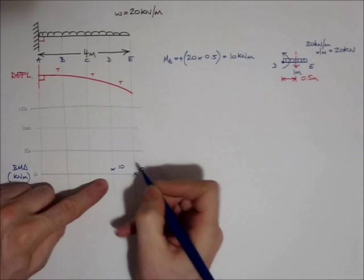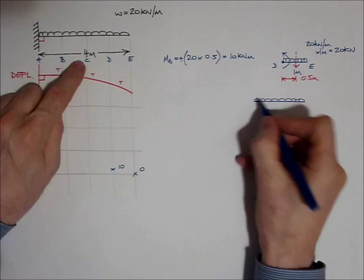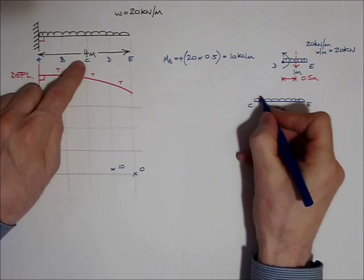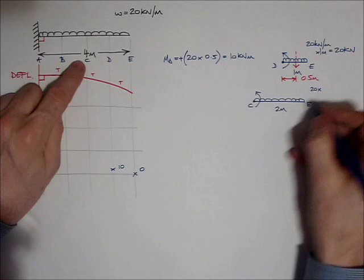Let's move on to point C. So point C, I can draw out the free body diagram. It's 2 metres long. There's E, there's C. It's going to have an internal bending moment to counteract this force turning around. And that force there, that UDL, is 20 kilonewtons a metre times 2 metres, so it all adds up to 40 kilonewtons.